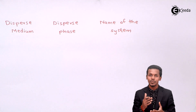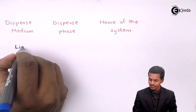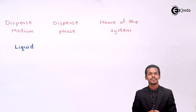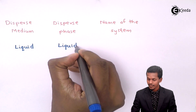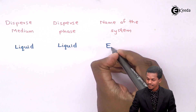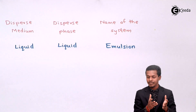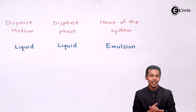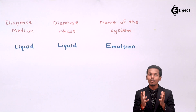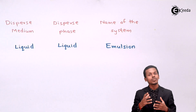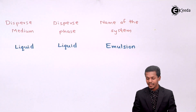Now considering a liquid dispersion medium: if both the dispersion medium and the dispersed phase are liquid, the system is called an Emulsion. For example, milk is an emulsion — both the dispersed phase and the dispersion medium are liquid. It is still considered a heterogeneous system because of particle size and the discontinuous nature of the dispersed phase.